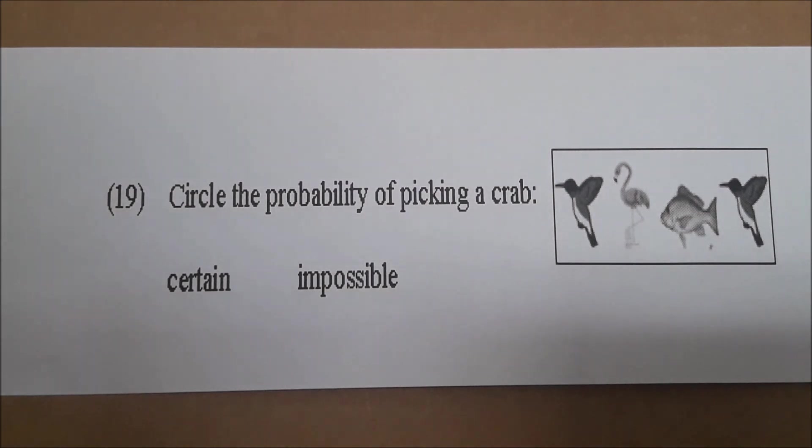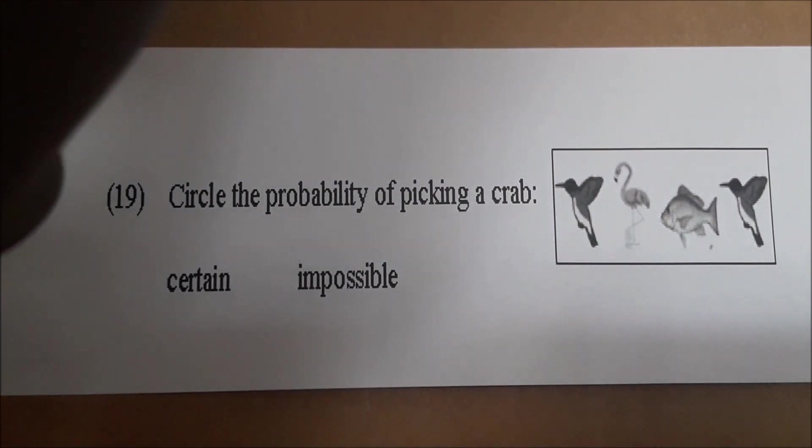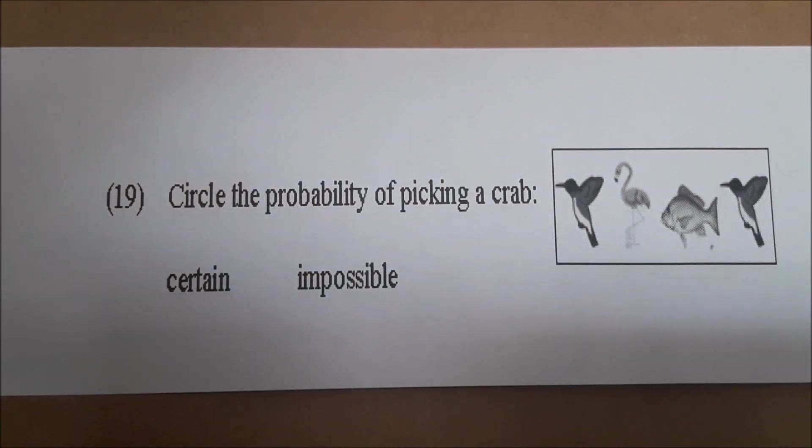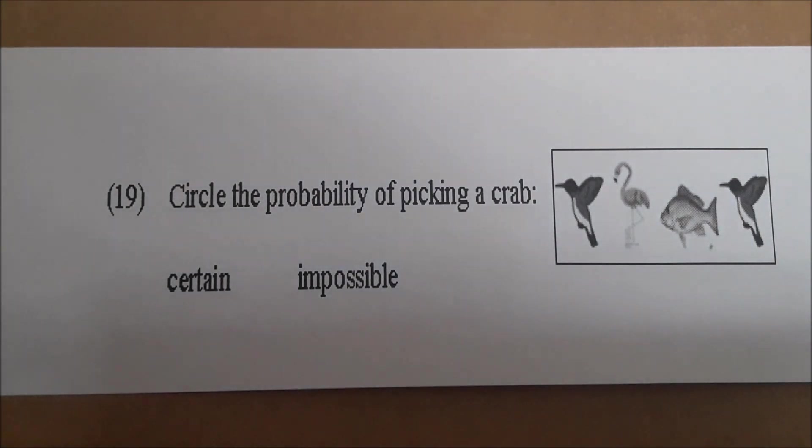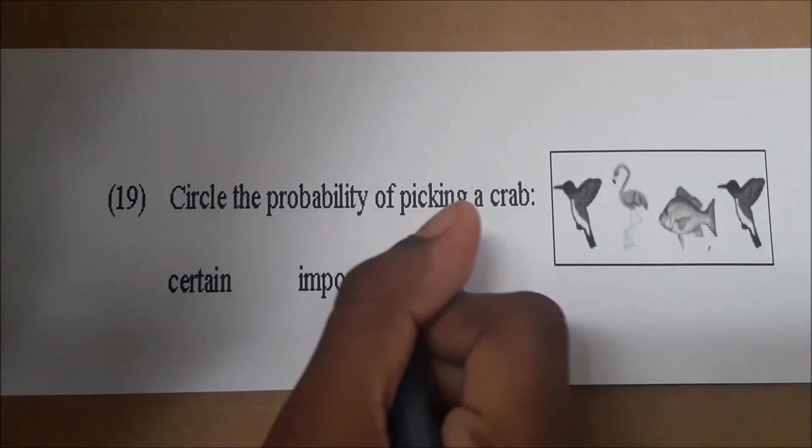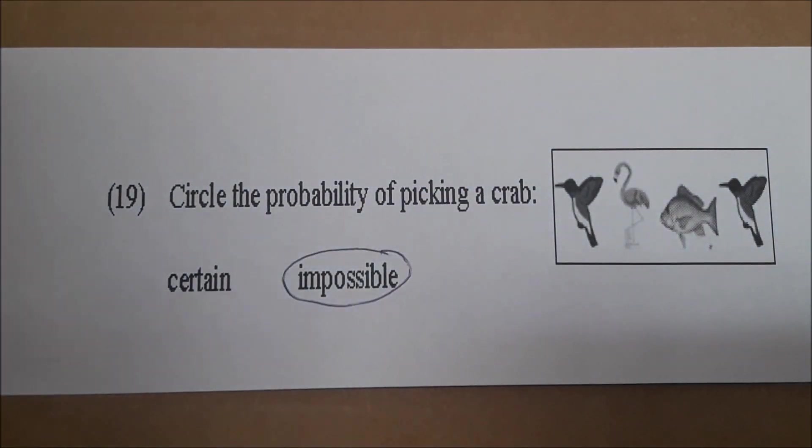Let's move on to number nineteen. Number nineteen, Sky, read it for us. Circle for probability of picking a crab certain or impossible. Okay. Some big words in there. Probability and then certain and impossible. Okay. Look at the pictures and you have a bird. You have a hummingbird, flamingo, a fish, and then another hummingbird. What's the answer, Sky? Impossible. Why? Because there's no crabs. Very good. No crab in the set. So circle the answer for us. Very good. Excellent job, Sky.